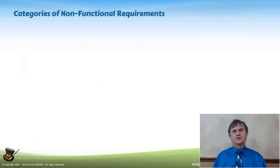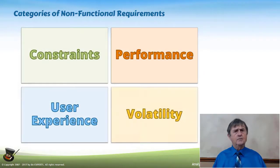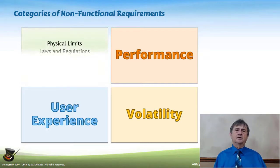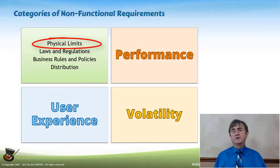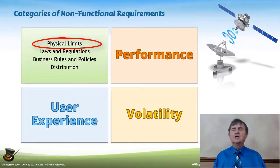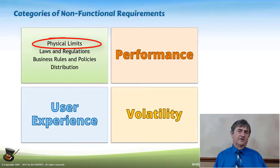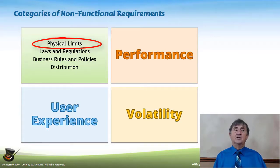What kind of categories are we talking about when we talk about non-functional requirements? The most common ones fall into one of four dimensions: constraints, performance requirements, user experience, or volatility. Some examples of constraints include physical limits — things like the speed of light. If you're dealing with software applications using satellite communications, there's a speed limit that is the speed of light, resulting in about a two-second delay in that communication. Other physical limits might be temperature — if you're developing an application used in a cold room or a clean room. Those are environmental constraints.